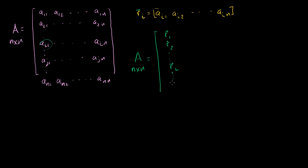You keep going down, you get rj. And then you keep going down until you get to the n-th row. Each of these guys are going to have n terms because you have n columns. So that's another way of writing the same n by n matrix.